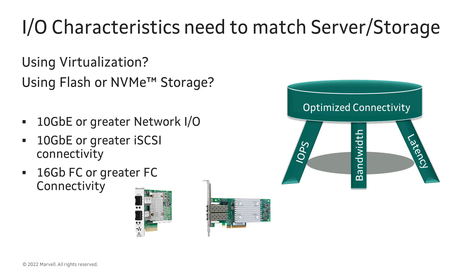Here are some basic guidelines. For high-performance virtualized servers with block storage applications and flash memory or NVMe storage, you must look at 10 or 25 gigabit Ethernet I/O for iSCSI or NVMe over TCP connectivity. For Fibre Channel, you need to leverage enhanced 16 gig, 32 gig, and 64 gigabit Fibre Channel for your SAN environment. These latest-generation I/O technologies offer a variety of new capabilities not found in legacy technologies like 1 gigabit Ethernet or 8 gigabit Fibre Channel.